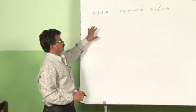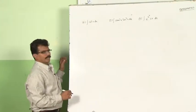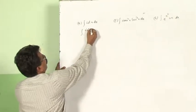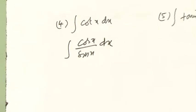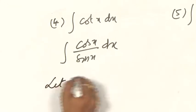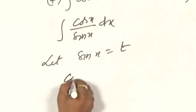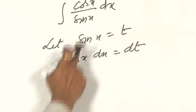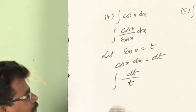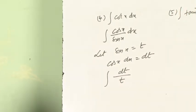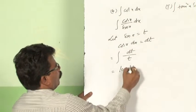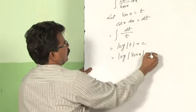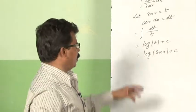Let us see some more examples on the substitution method. Observe the first question: integral of cot(x) dx. This can be used as a formula also. How to find integral of cot(x) dx? This can be written as integral of cos(x)/sin(x) dx. Now let us substitute: let sin(x) = t. The derivative of sin(x) is cos(x) dx = dt. Substituting the values: cos(x) dx written as dt and sin(x) written as t. Integral of 1/t dt is log|t|, therefore log|sin(x)| + c. Therefore, the integral of cot(x) is log|sin(x)| + c.